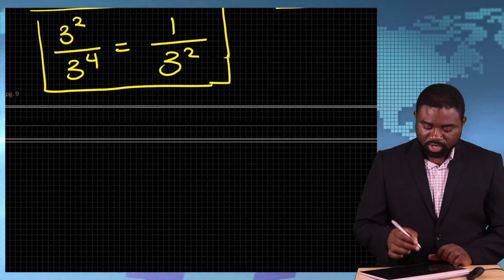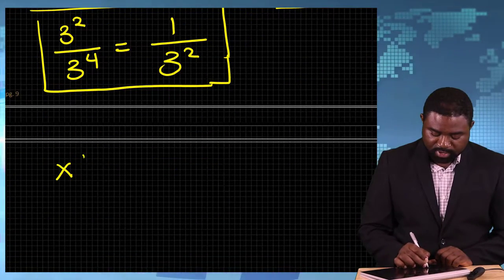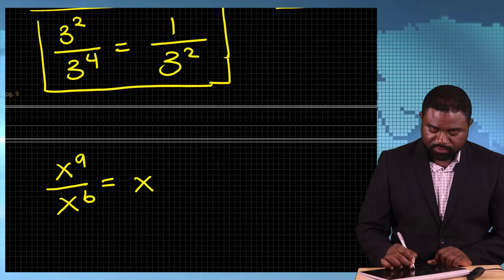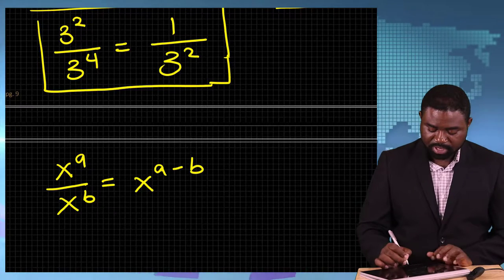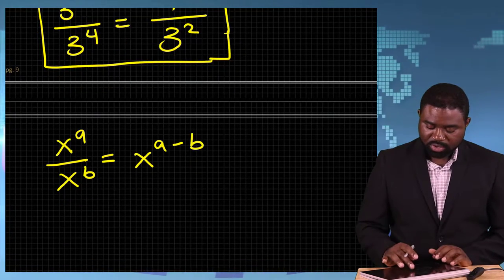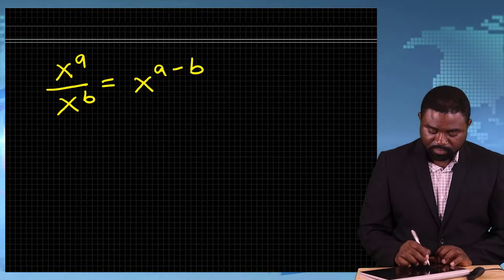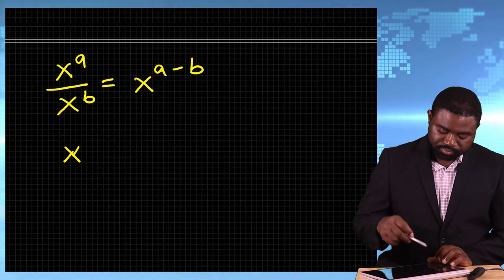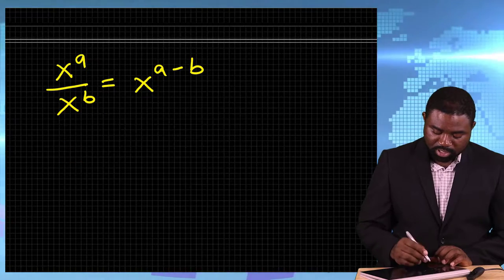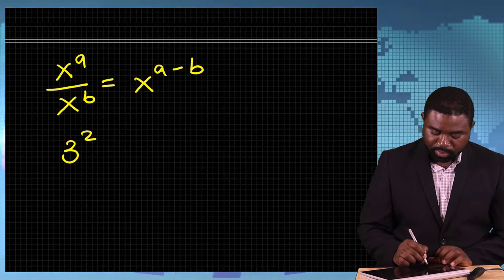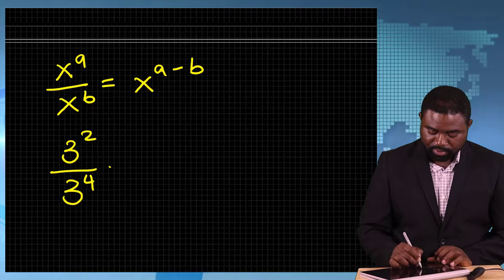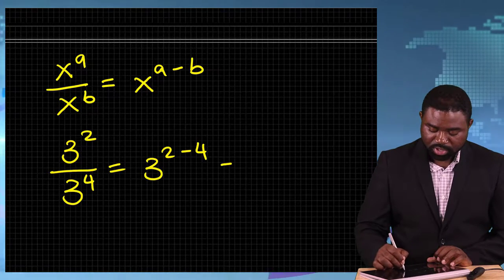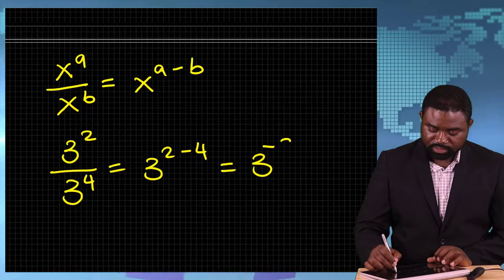Similarly, we know that x to the power A divided by x to the power B is equal to x to the power A minus B. So that would mean that 3 raised to the power 2 divided by 3 raised to the power 4 is 3 to the power 2 minus 4, which is 3 to the power negative 2.